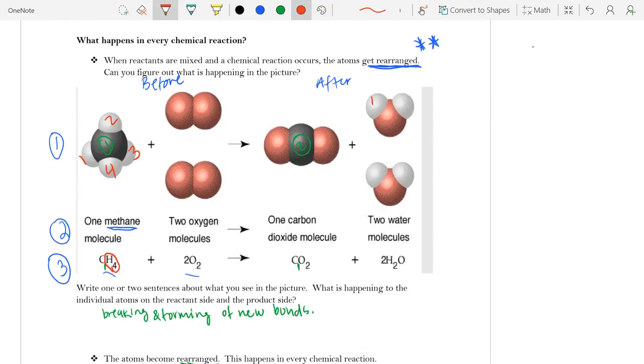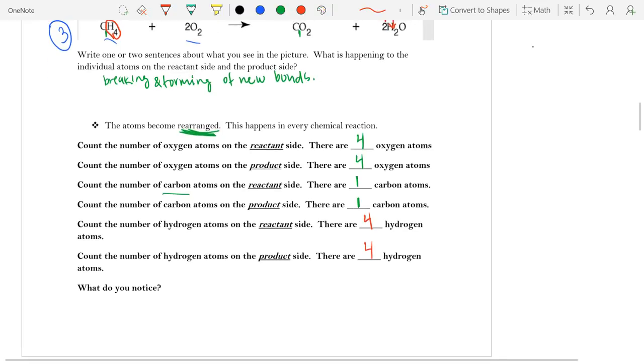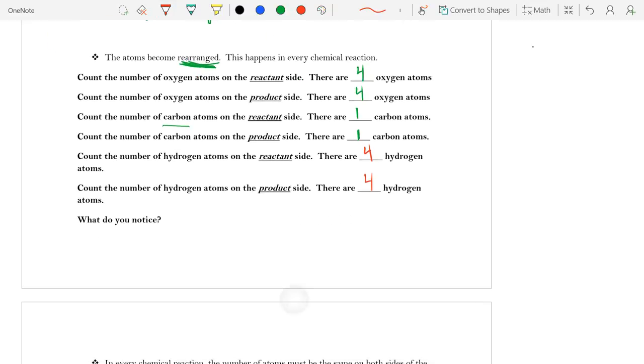But we can also see that this subscript four tells me that I have four on my reactant side. And if I look at my products, I can, again, count the white circles, but I can also look at my coefficient multiplied by my subscript, two times two gives me four. And so what we notice is, look, on both the reactant side and the product side, my numbers stayed the same.